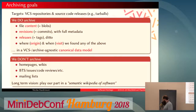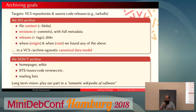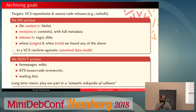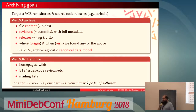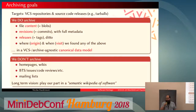What we don't do is archive what's around the software — for instance bug tracking systems, home pages, wikis, or mailing lists. There are projects that work in this space; the Internet Archive does a lot of good work archiving the web. Our goal is not to replace them but to work with them and do linking across all archives that exist. For mailing lists there's the Gmane project that does a lot of archiving of free software mailing lists. Our long-term vision is to play a part in a semantic Wikipedia of software — a Wikidata of software — where we can hyperlink all archives that exist.